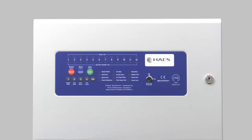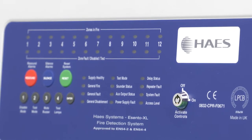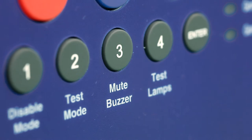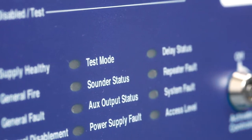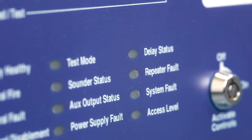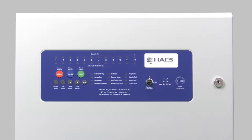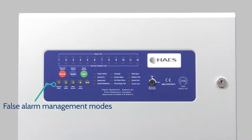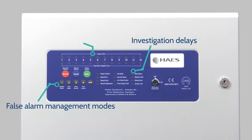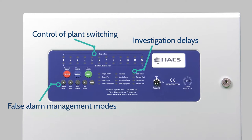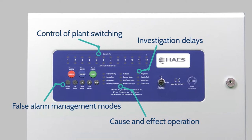The Ascento XL is more than just a conventional panel and has many features you would expect to see on more complex, addressable systems. The fire panel's many features include false alarm management modes, investigation delays, control of plant switching and cause and effect operation.